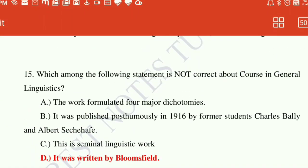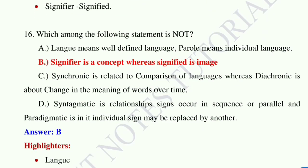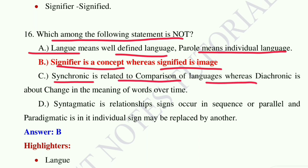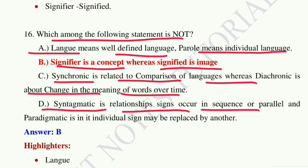Let's begin question number 16: which among the following statements is not true? Option A: langue means well-defined language and parole means individual language. Option B: signifier is a concept whereas signified is an image. Option C: synchronic is related to comparison of language whereas diachronic is about change in meaning of words over time. Option D: syntagmatic is relationship of signs that occur in sequence or parallel, and paradigmatic is where an individual sign may be replaced by another. The answer is option B.